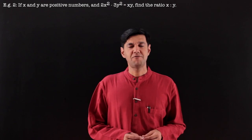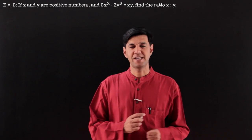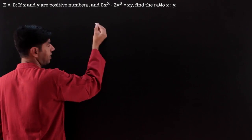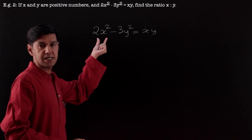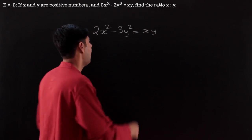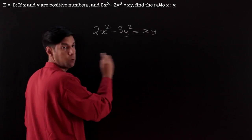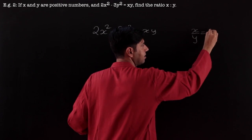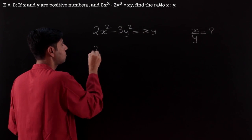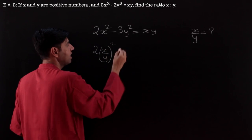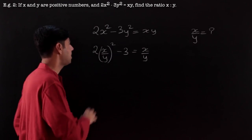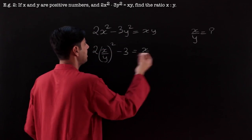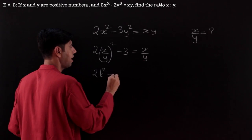Another question: if x and y are positive numbers and 2x² − 3y² = xy, find the ratio of x to y. Since the question asks for x/y, divide throughout by y². This gives 2(x/y)² − (x/y) − 3 = 0. Letting k = x/y, we get the quadratic 2k² − k − 3 = 0.